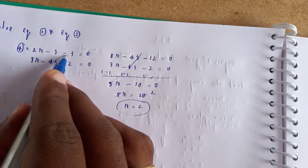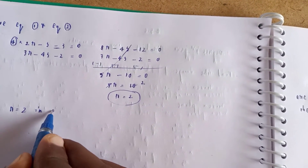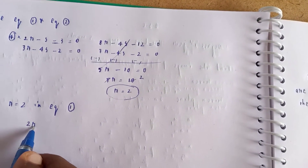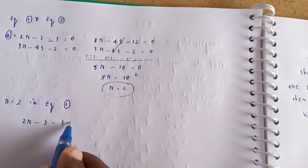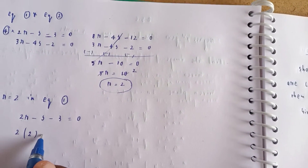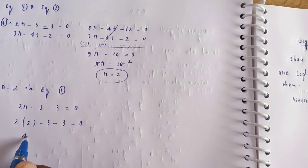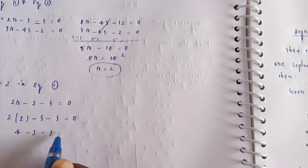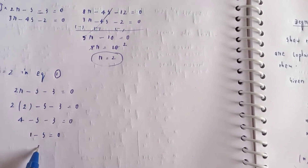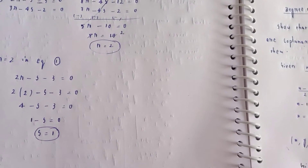r = 2. Substituting r = 2 into equation 1: 2(2) − s − 3 = 0, so 4 − s − 3 = 0, giving s = 1. So r = 2 and s = 1. The lines are coplanar.